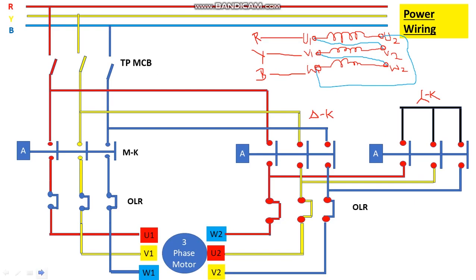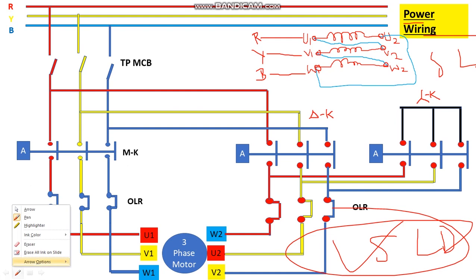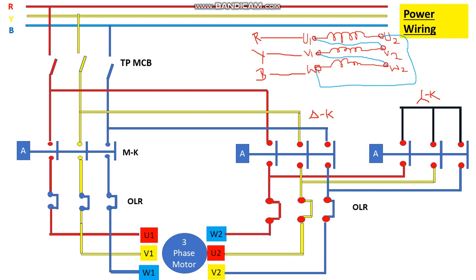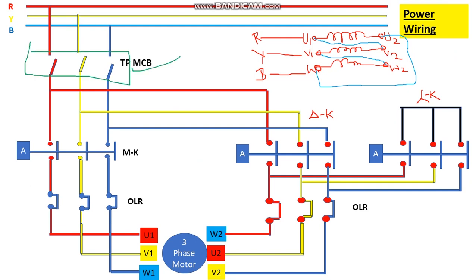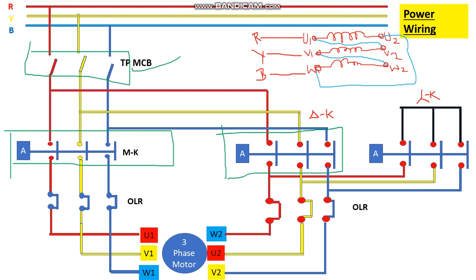Now let's move to the power wiring. This is the single-line diagram — the power drawing of the star delta starter. We have a three-phase bus bar R, Y, B, then a main incomer triple-pole MCB, followed by the main contactor, the delta contactor, and the star contactor.